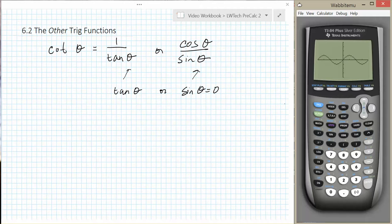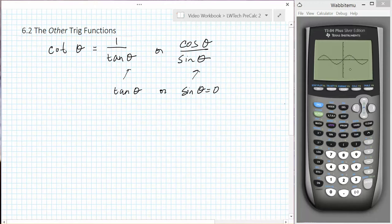Since the sine of theta is equal to 0 at each multiple of pi, then the cotangent theta function will have vertical asymptotes at 0 plus pi k.